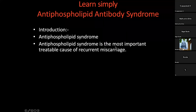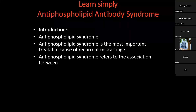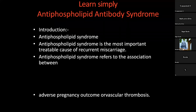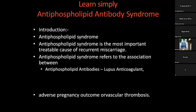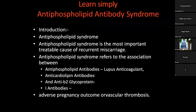Antiphospholipid syndrome is the most important treatable cause of miscarriage. If a patient presents with miscarriage, antiphospholipid syndrome is the most important treatable cause. It refers to the association between: number one, antiphospholipid antibodies — that is lupus anticoagulant; number two, anti-cardiolipin antibodies; and number three, anti-beta-2-glycoprotein I antibodies — and adverse pregnancy outcomes or vascular thrombosis.